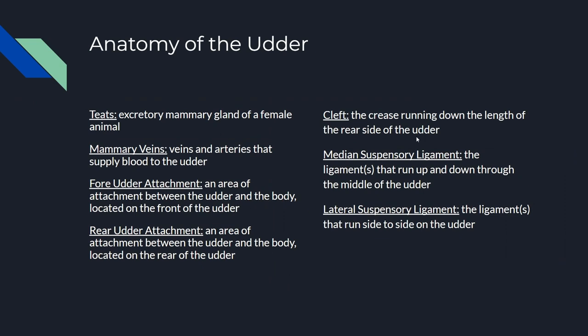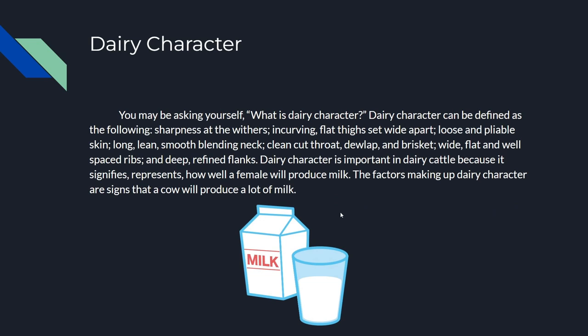I have the definitions of all those terms on screen — feel free to pause the video and read these. Those are the proper definitions of each. And that covers the most important anatomical parts of the udder — the most important thing listed at 40 percent on the scale of importance. The next highest thing is dairy character.